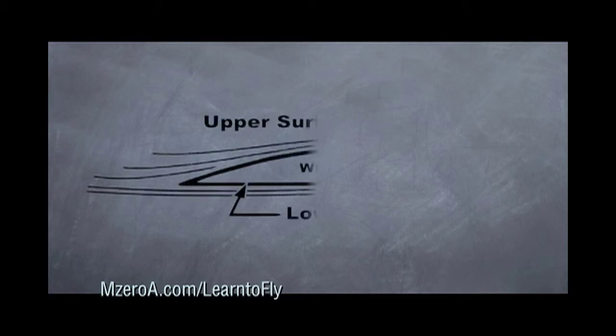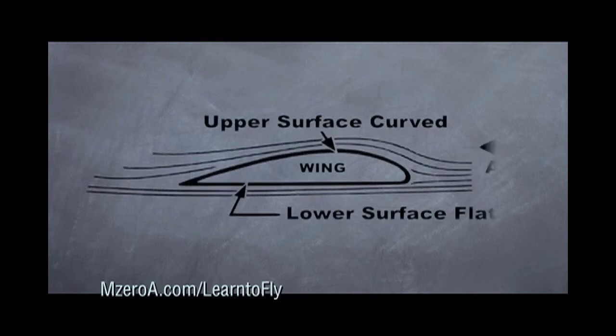Unlike most would think, airplane wings are not flat. Airplane wings actually have a curvature to them. In fact, the upper surface is curved. This allows the air flowing over the top of the wing to travel faster and thus generates an area of low pressure.